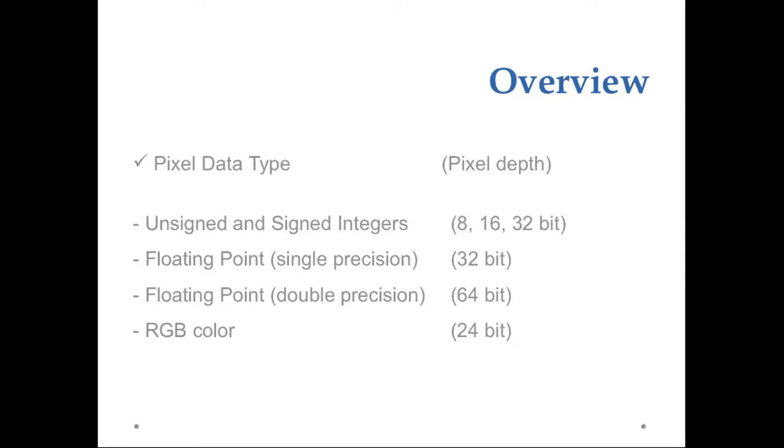The pixel data type is another information needed for correct loading and display of the image. The data type refers to the kind of data with which the numerical value of a pixel has been stored in the image. We can have integers or floating point values with a certain number of bits allocated for storage. Here I summarize some common values, but the list is not exhaustive. We can have signed or unsigned integers with a pixel depth of 8, 16, or 32-bit, floating point values in single or double precision, and in the case of a three-channel color image with 8-bit for each channel, we will have a pixel depth of 24-bit.